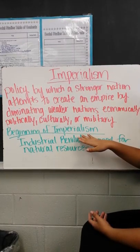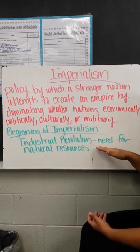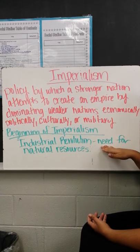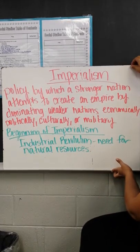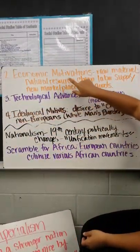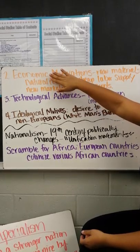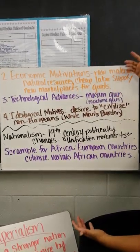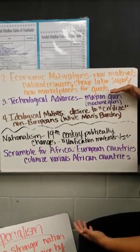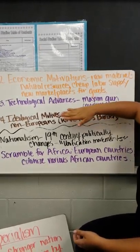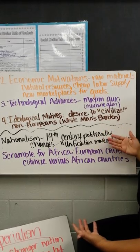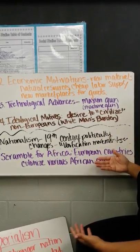So what started imperialism? Imperialism is going to begin with the Industrial Revolution, because countries are going to need more natural resources to produce the goods they're trying to make. The second reason is economic motivations — economic means money. They need raw materials, which are like natural resources. They want a cheap labor supply, which they're able to get from Africa and Asia. They want new marketplaces to sell their goods, so if they colonize new areas, they're able to sell those areas their goods and make more money.